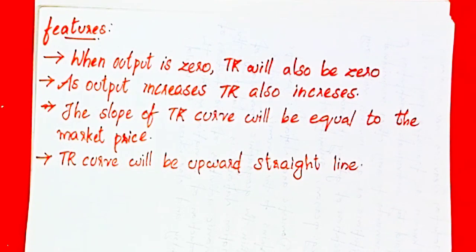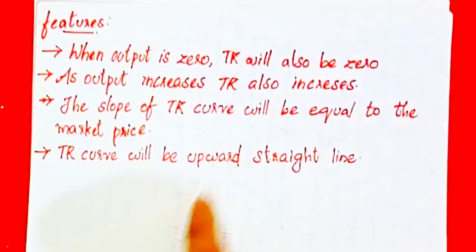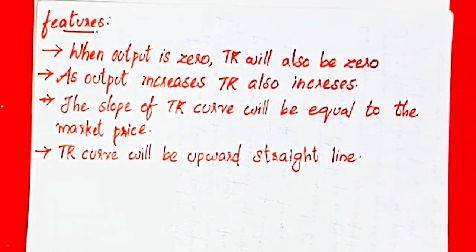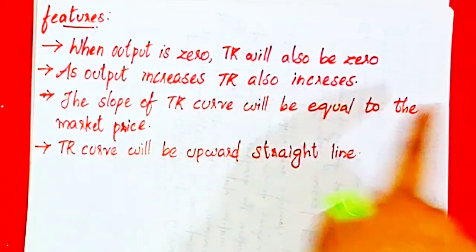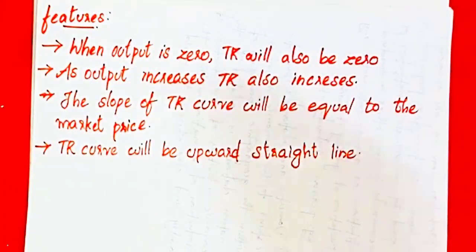When output is zero, total revenue is also zero. As output increases, TR also increases.